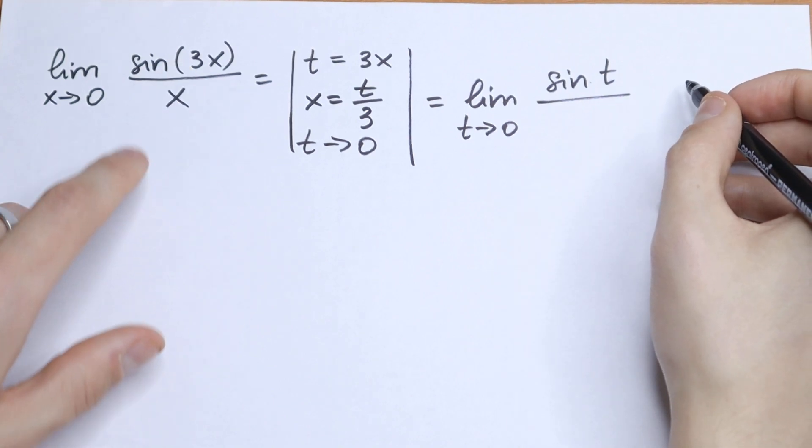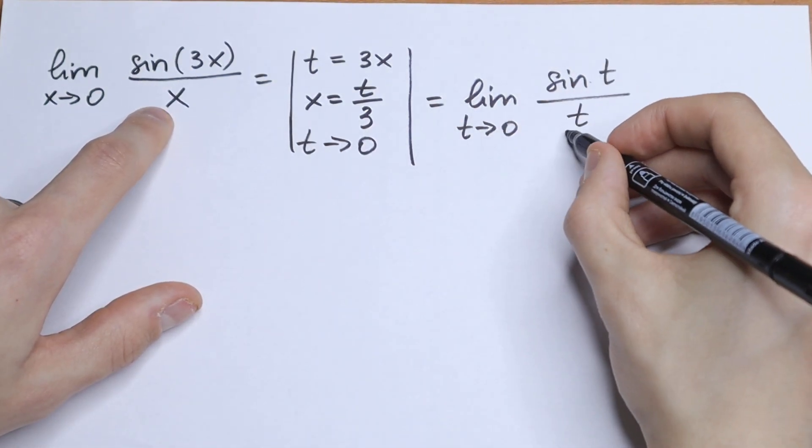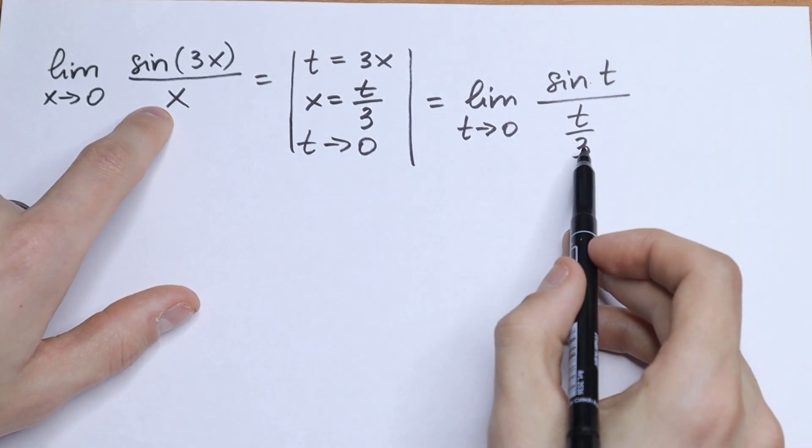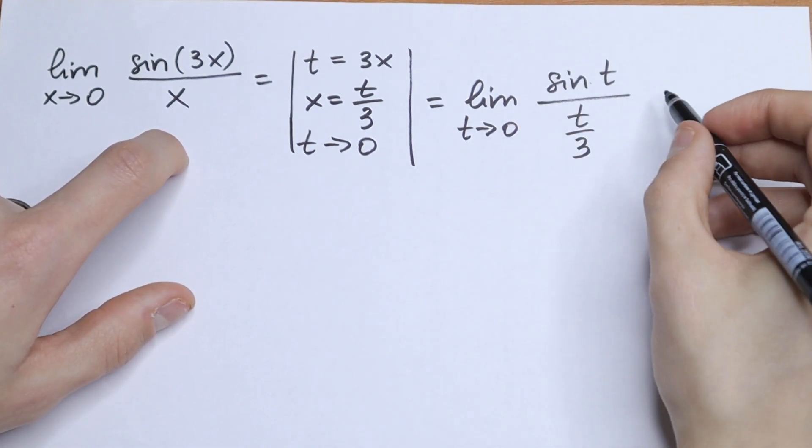And in our denominator, instead of x, we will have t over 3. If we divide, this 3 goes to our numerator.